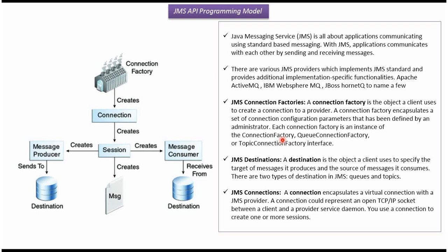There are two types of JMS destinations: the first one is Queue and the second one is Topic. The message producer sends messages to the destination and the message consumer consumes messages from the destination.